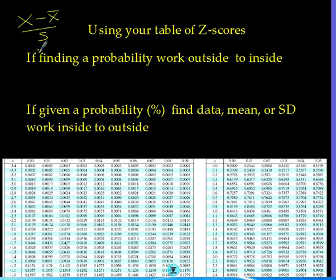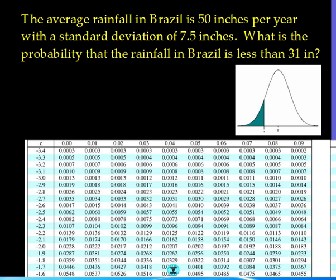So I just have two example problems that we're going to take a look at and I'll walk you through how to use the table to solve them. So let's say that the average rainfall in Brazil is 50 inches per year with a standard deviation of 7.5 inches. And we want to know what's the probability that the rainfall in Brazil is less than 31 inches. So this is my data point x, this is my mean, and this is my standard deviation.